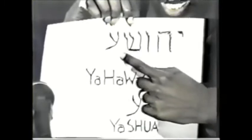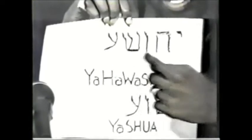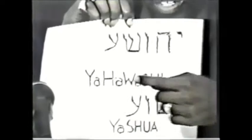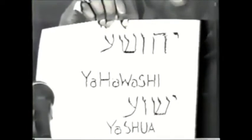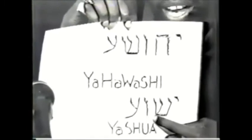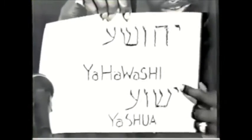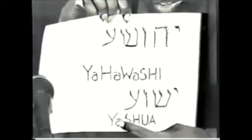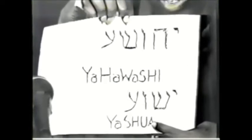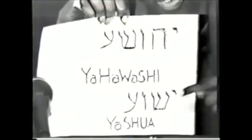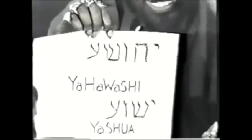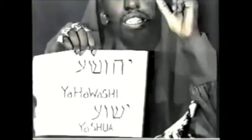You have the Yah, Ha, Wa, Shah, and the I sound here — pronounced Yehawashai. That's in Acts 7, verse 45. However, in Matthew chapter 1, verse 21, they have Jesus translated Yahshua. So now you have two different names for the name Jesus. Which one is the correct translation?